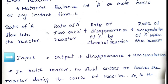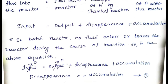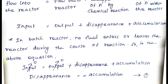To derive the expression for a batch reactor, we know that no fluid enters or leaves the reactor once the reaction starts. So in the material balance equation we cancel the input and output terms. The remaining two terms are disappearance and accumulation, giving us: Disappearance = −Accumulation.